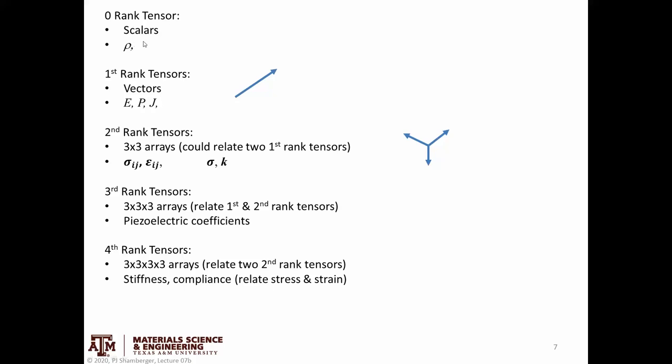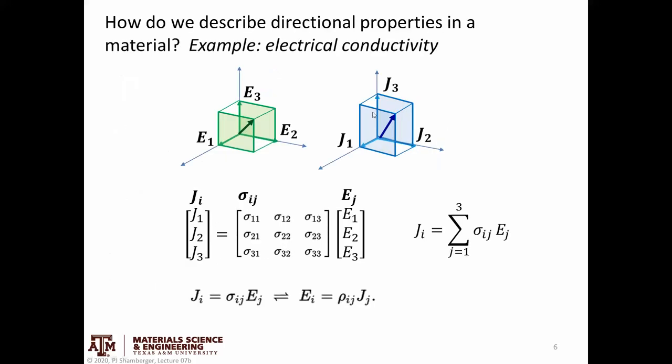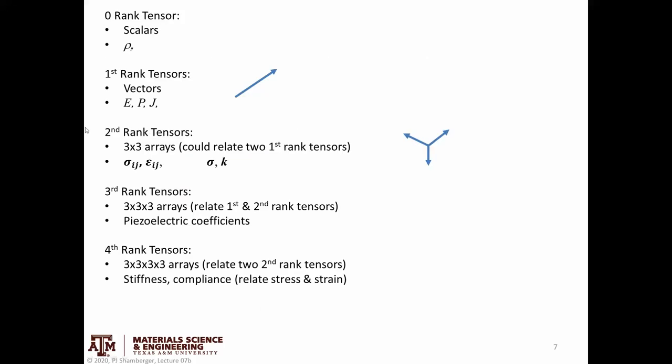A rank 1 tensor is a three-element vector. So for example, electric field or current density are both rank 1 tensors. A second rank tensor relates two rank 1 tensors. So this is a 3x3 array.